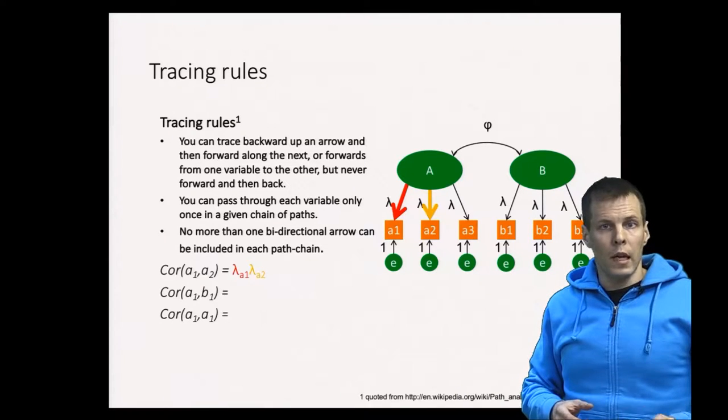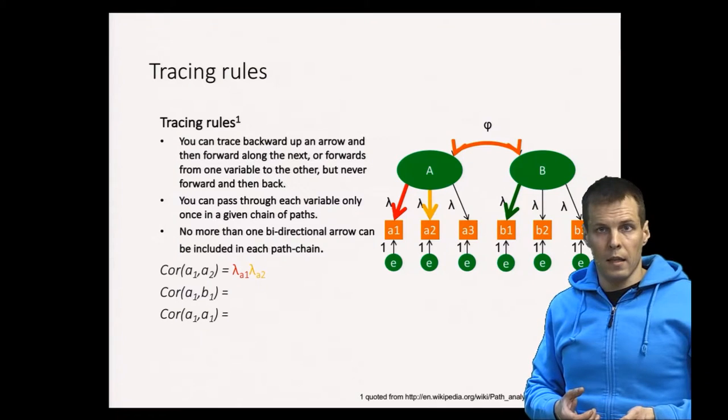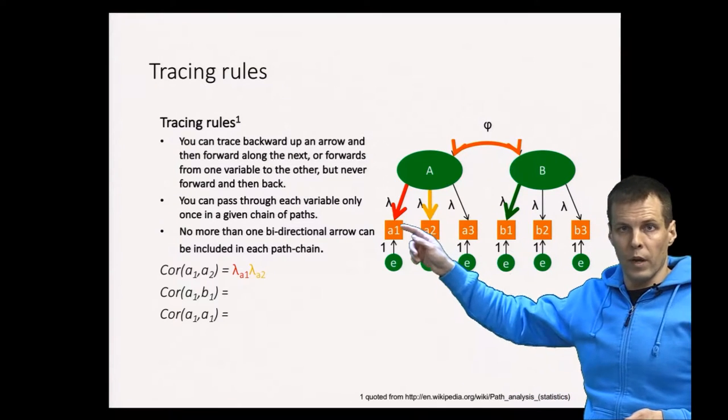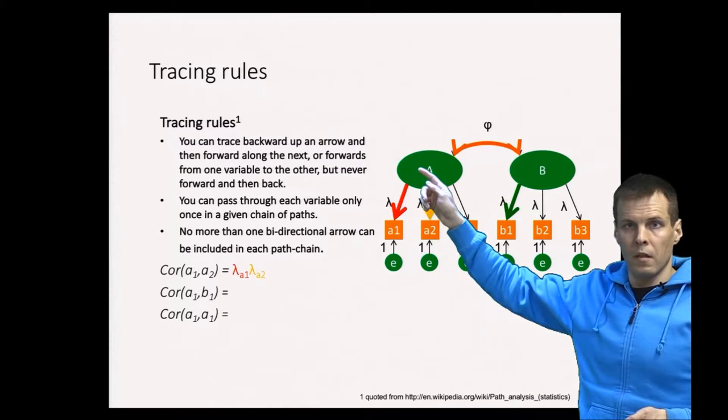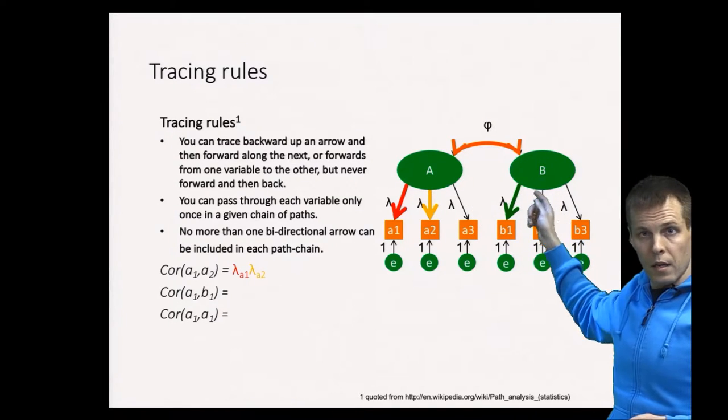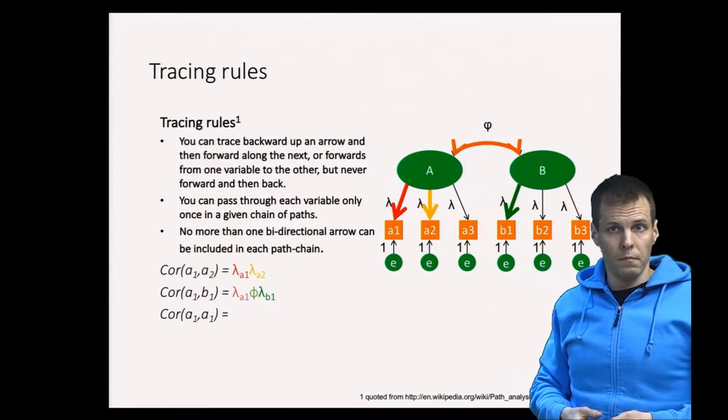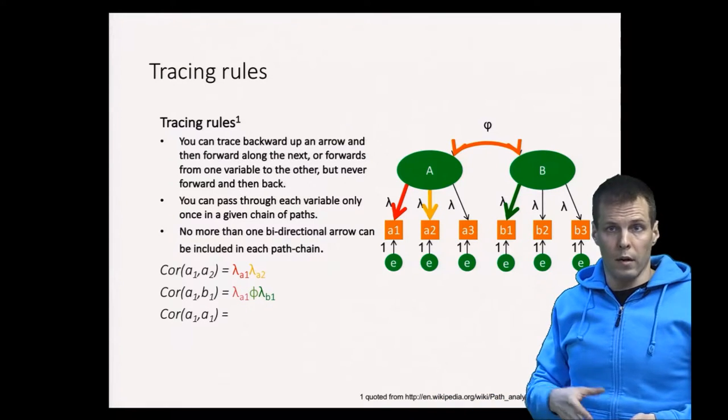Then a1-b1 is calculated similarly. The path we take is from a1 to factor A, then the correlation between factors, and then from factor B to b1. That's the correlation between a1 and b1.